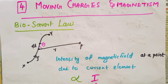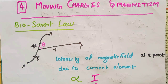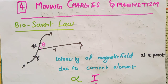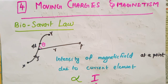Welcome back to IGVALET. Plus 2 Physics Chapter 4: Moving Charges and Magnetism. In this chapter, the most important topic is Biot-Savart Law. We are going to talk about the defined geometry and explain Biot-Savart Law. We are going to talk about two derivations which are very important, and a few questions related to the Plus 2 exam.